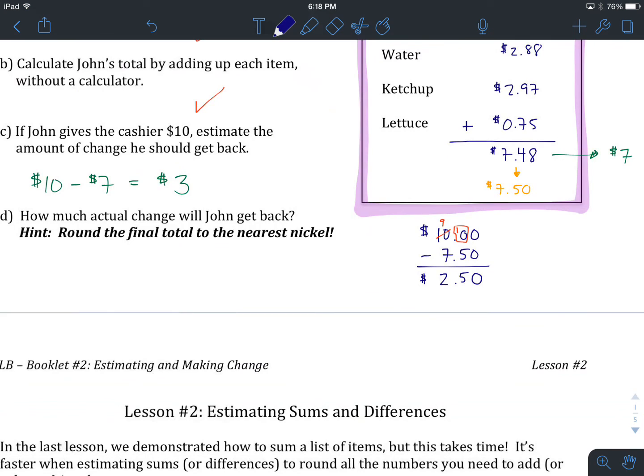So, John's actual change that he gets back is going to be $2.50. And this is the end of our first lesson in booklet number 2. Hopefully, this material is making sense to you. If not, now's a good time to go back and review parts of the video. And if you're rocking, time to head on to the worksheet. And then we'll see you in lesson number 2.